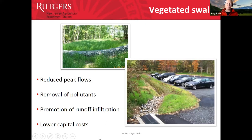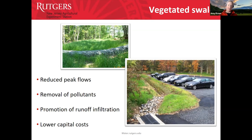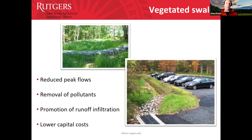Vegetated swales are a great way to manage stormwater — they reduce peak flow, get water into the ground, and can direct stormwater to places you want it rather than creating drainage issues where you don't. Essentially a large vegetated ditch along a parking area, roadway, or field, with some engineering so water infiltrates where intended and plants take up water while preventing erosion.